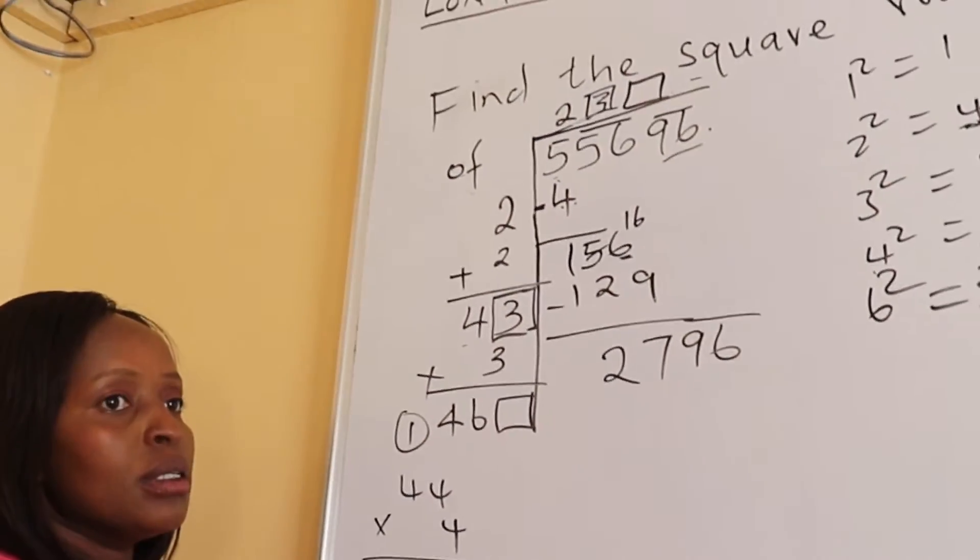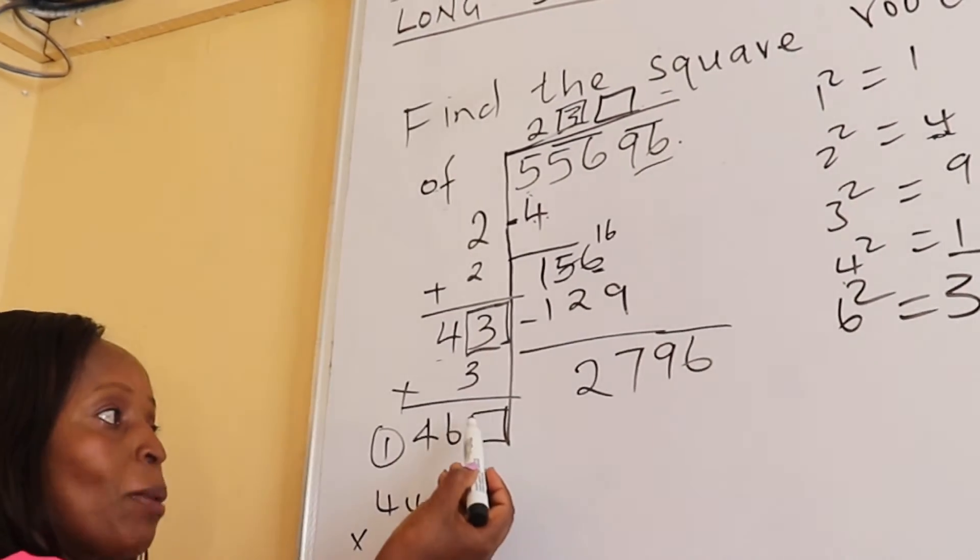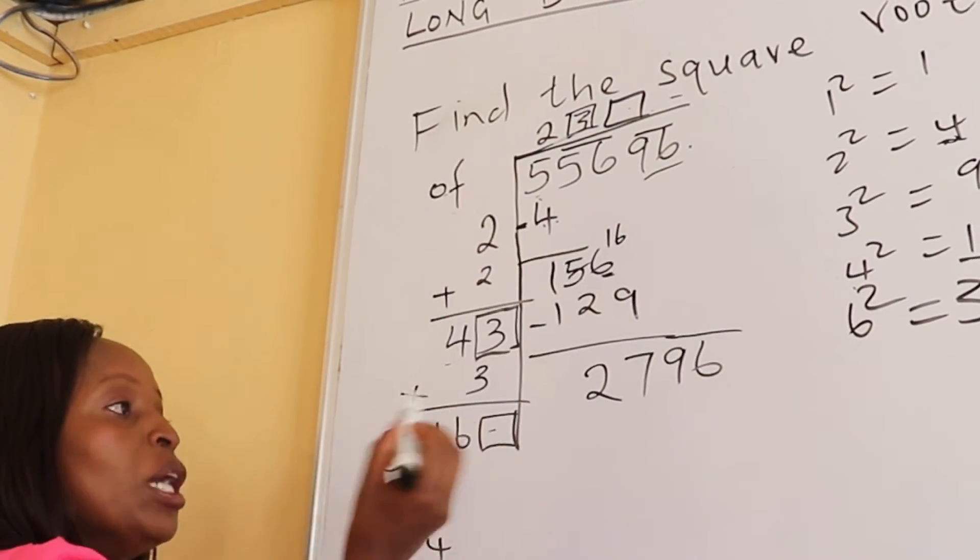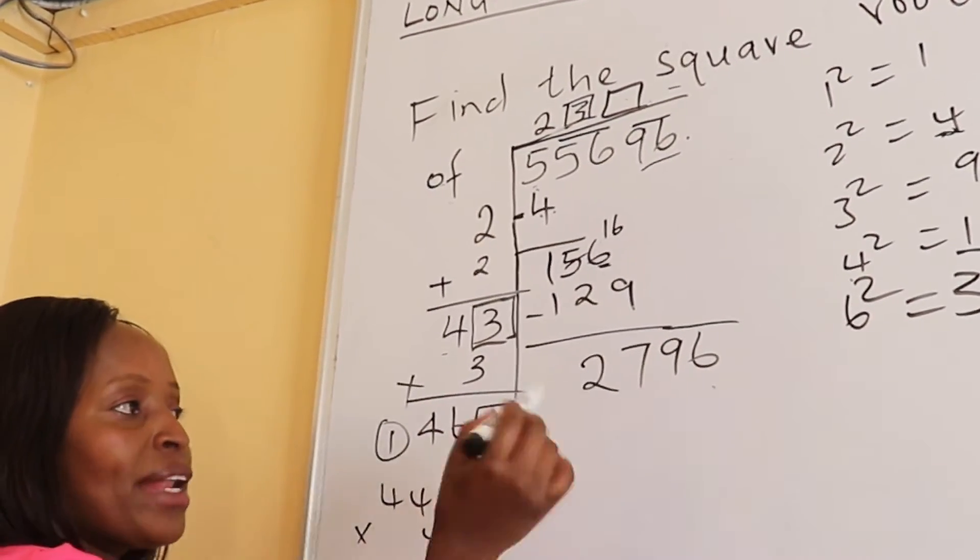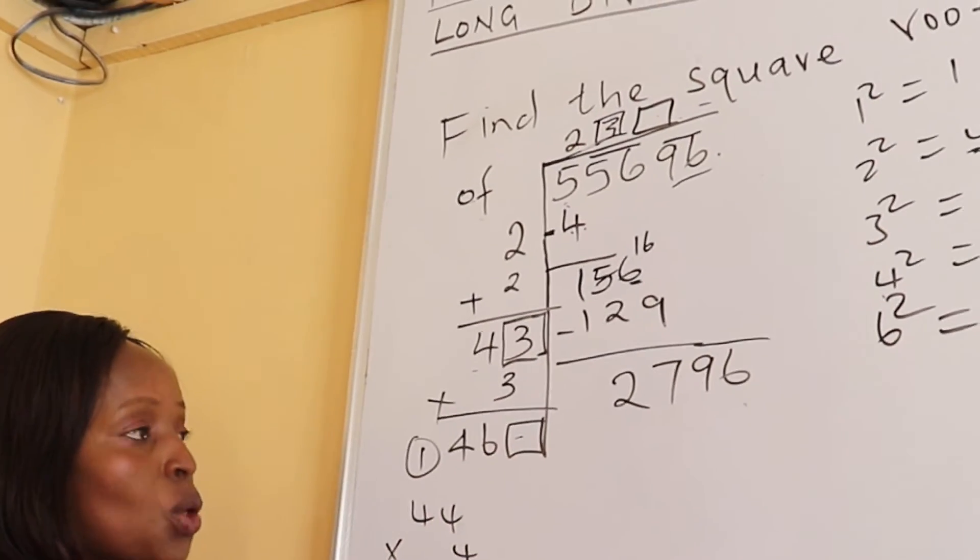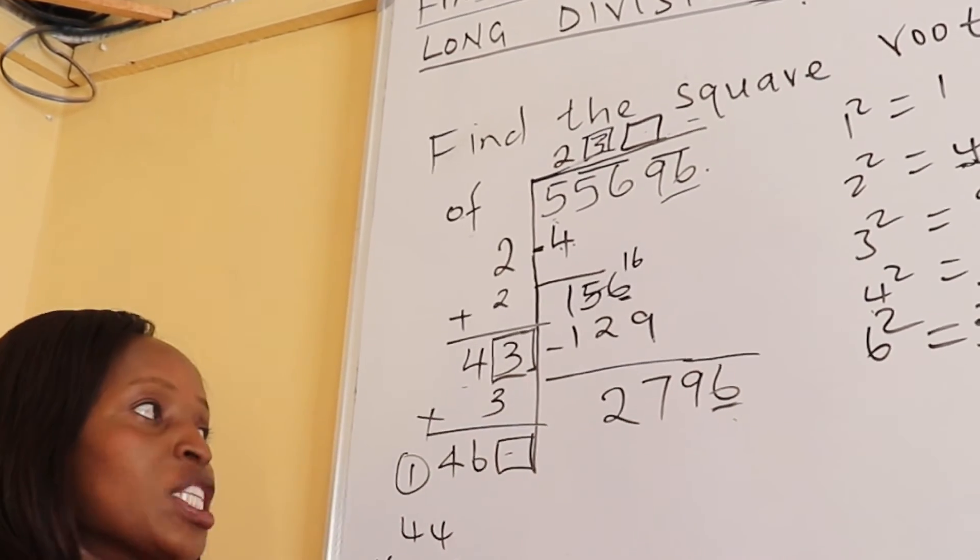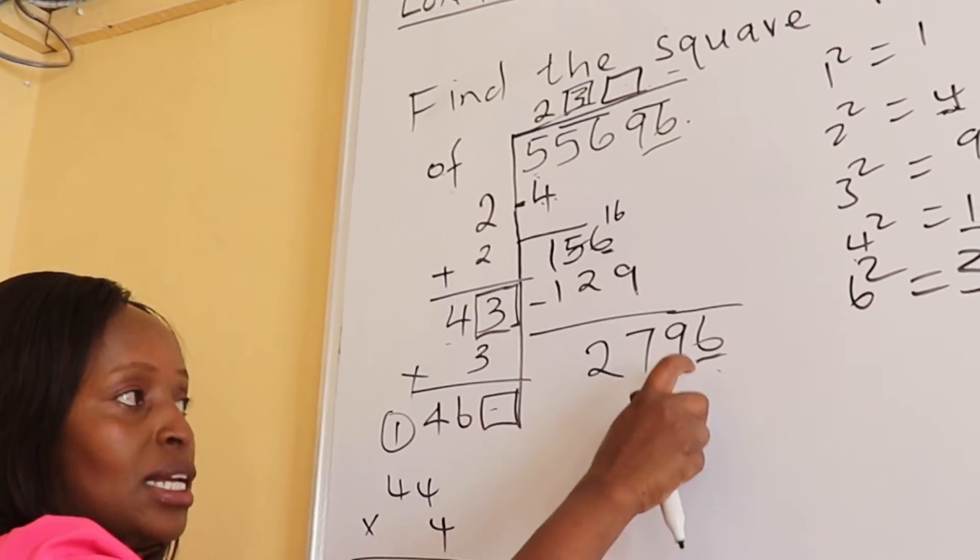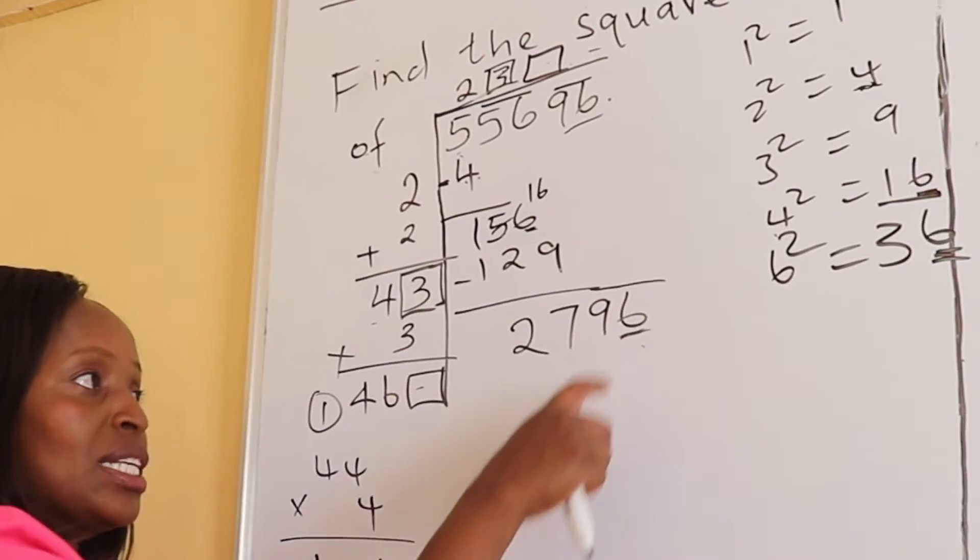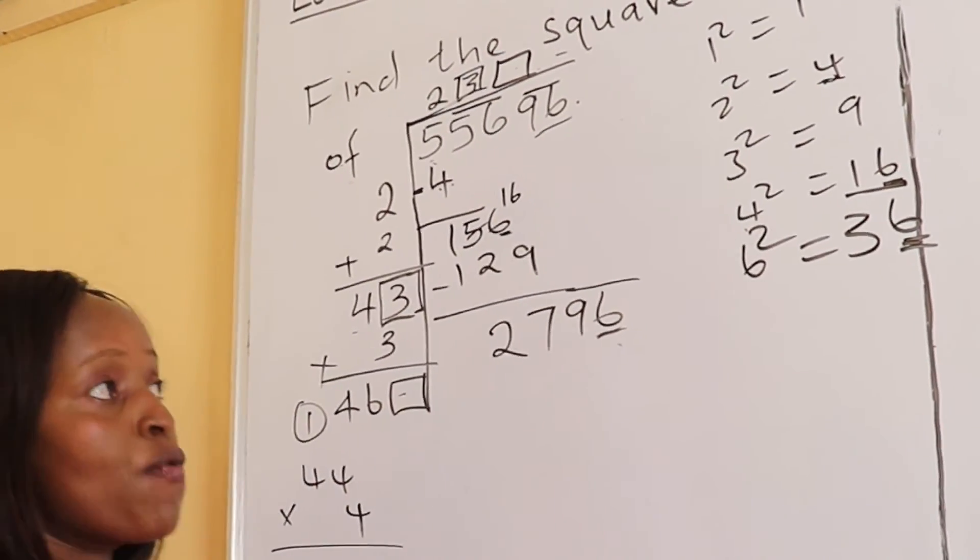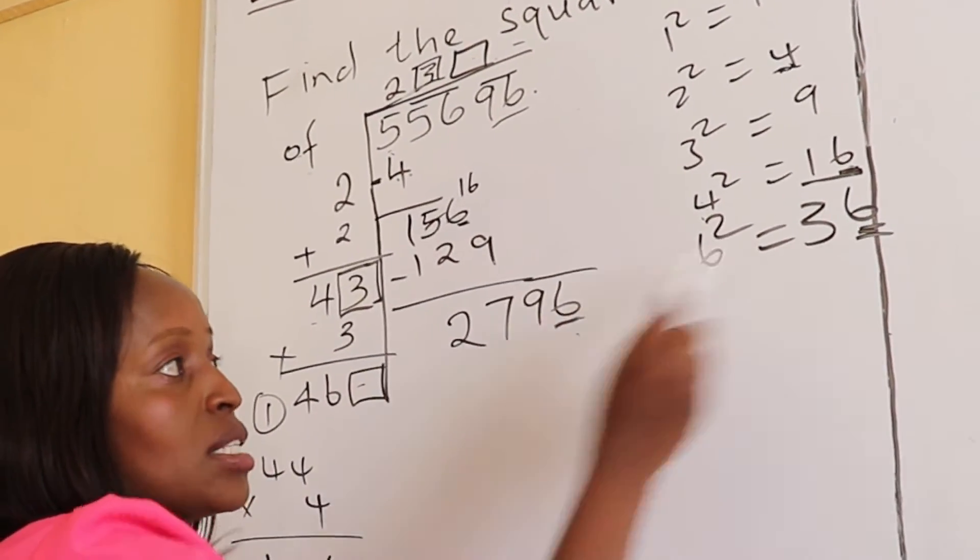And now we continue with the trial and error method to see which digit, when we put it here and here, when we multiply we get a number equal to this or near this one. Again, because the number ends with digit 6, we look for a digit that when you square it ends with 6. This number can either be 4, because 4 squared ends with 6, or 6, because 6 squared ends with 6.